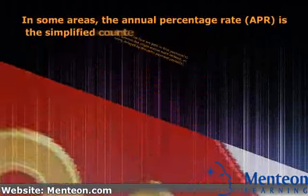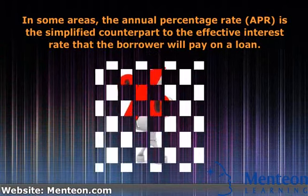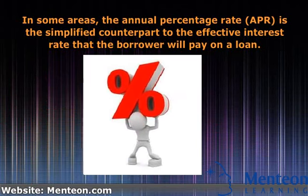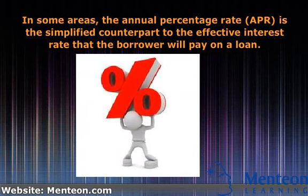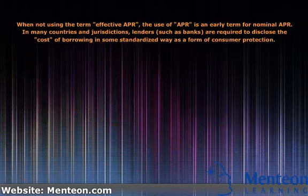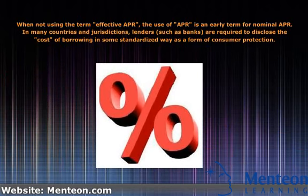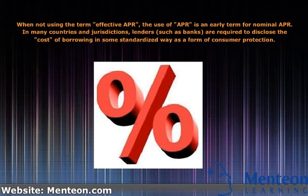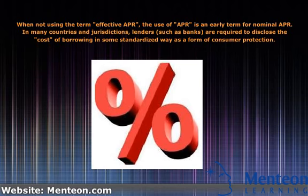In some areas, the annual percentage rate, APR, is the simplified counterpart to the effective interest rate that the borrower will pay on a loan. When not using the term effective APR, the use of APR is an early term for nominal APR in many countries and jurisdictions. Lenders, such as banks, are required to disclose the cost of borrowing in some standardized way as a form of consumer protection.